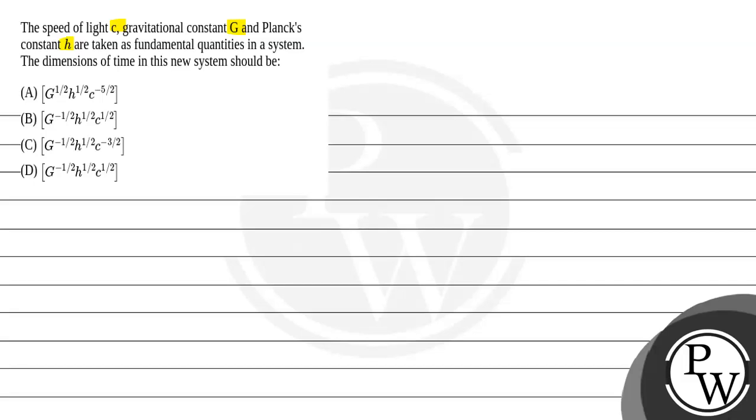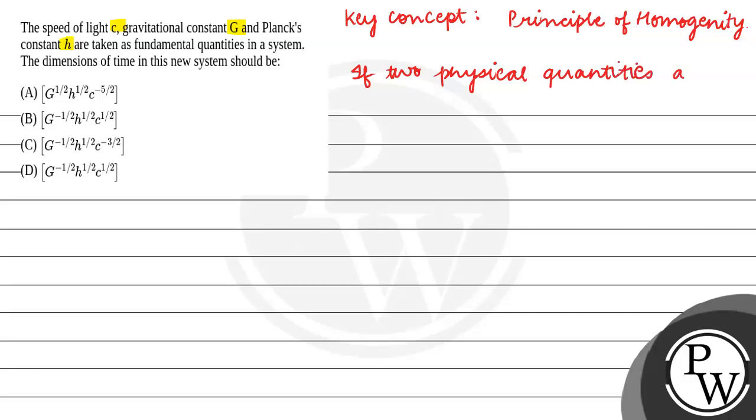So the key concept here is the principle of homogeneity, which means if two physical quantities are equated, then they must have the same dimensional formula.